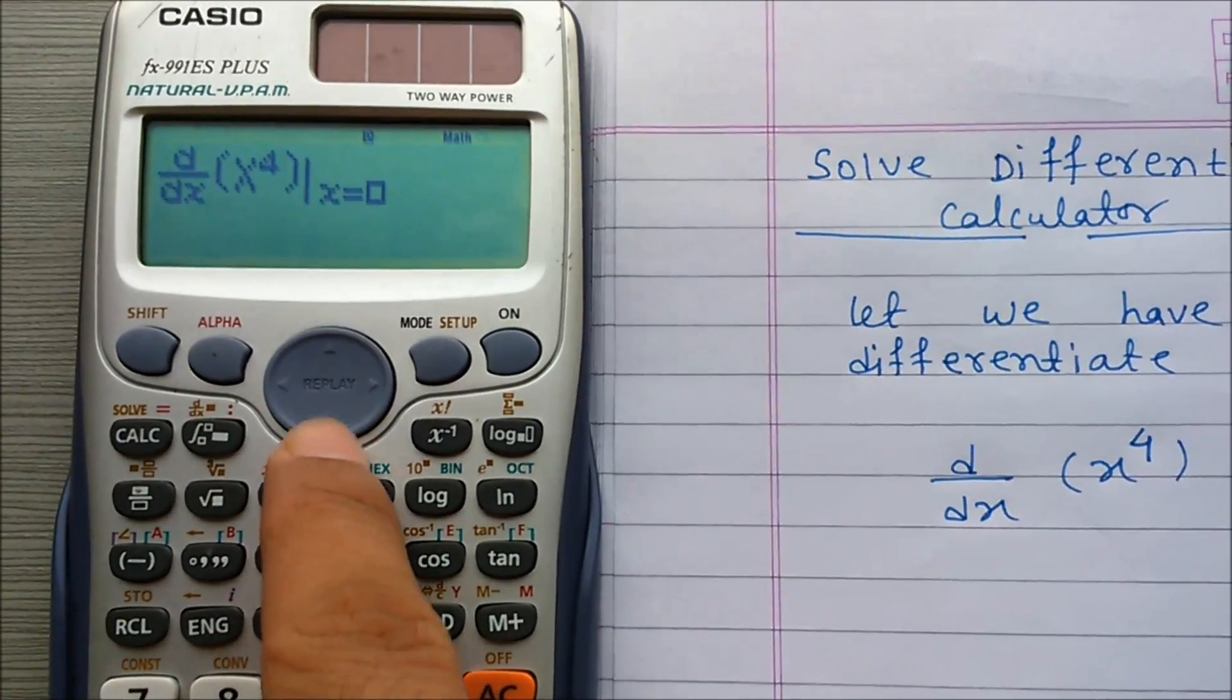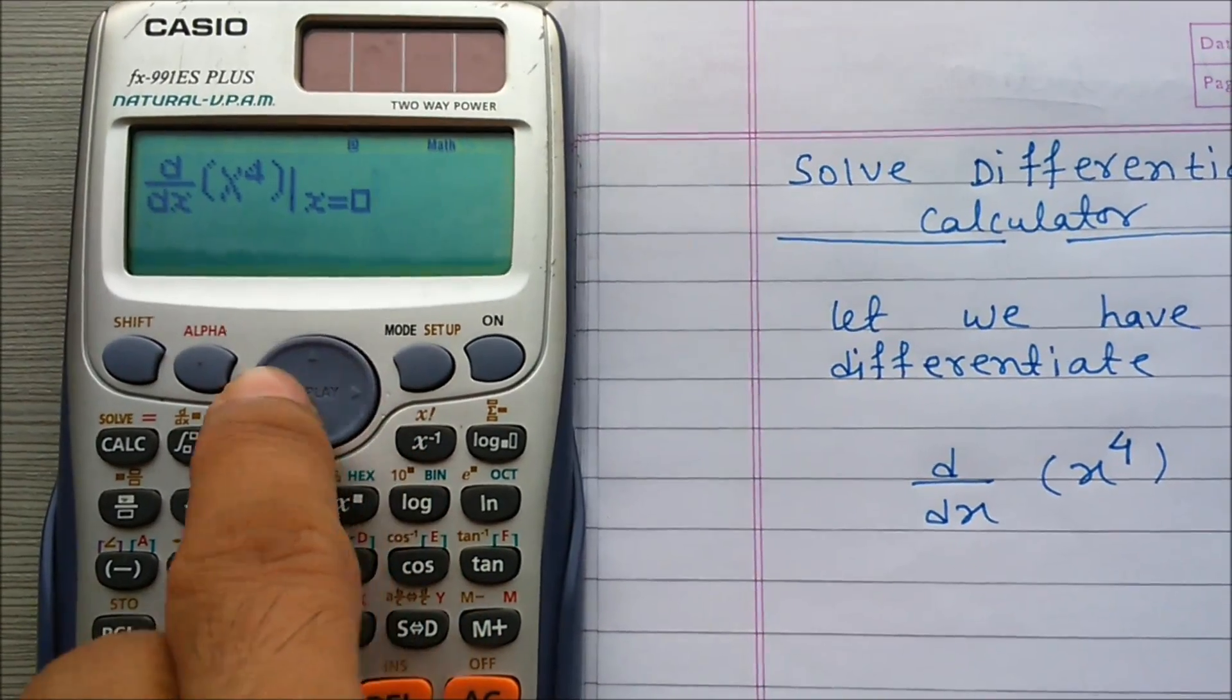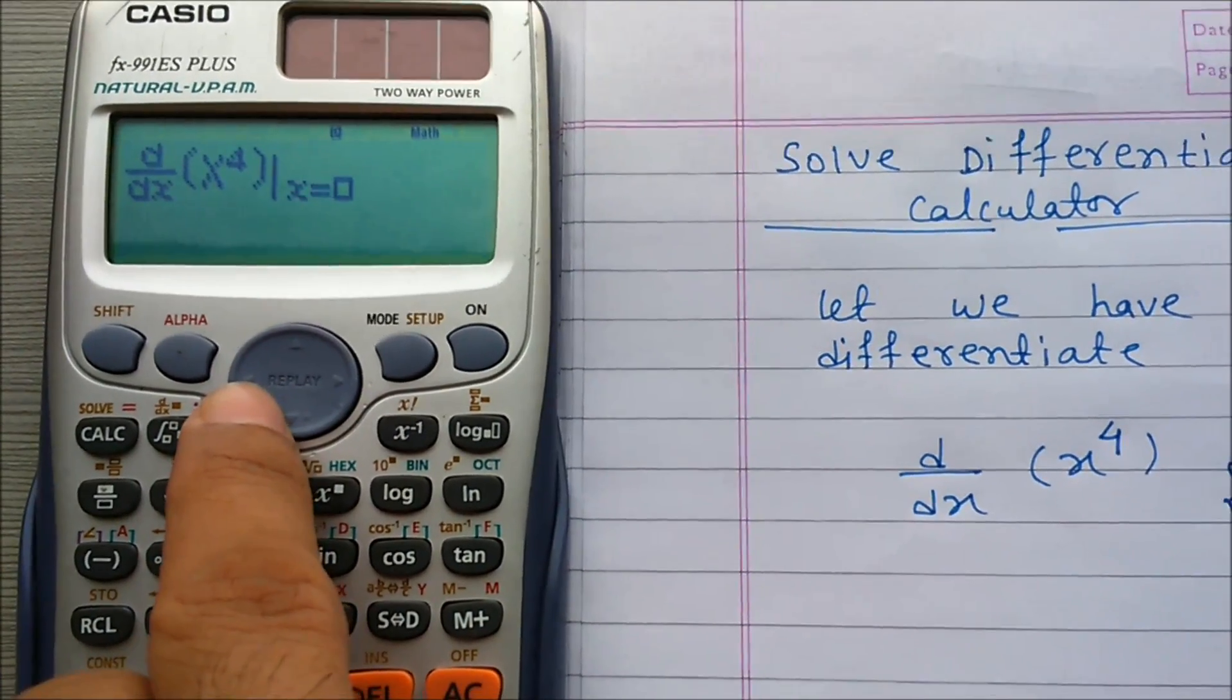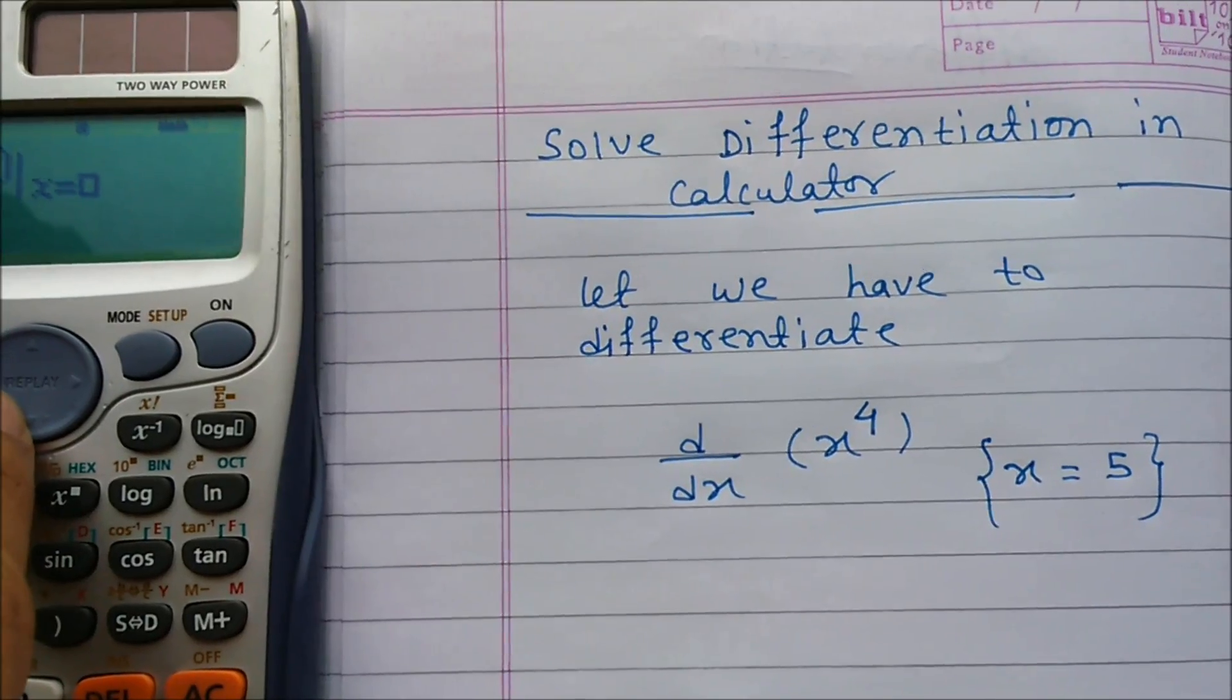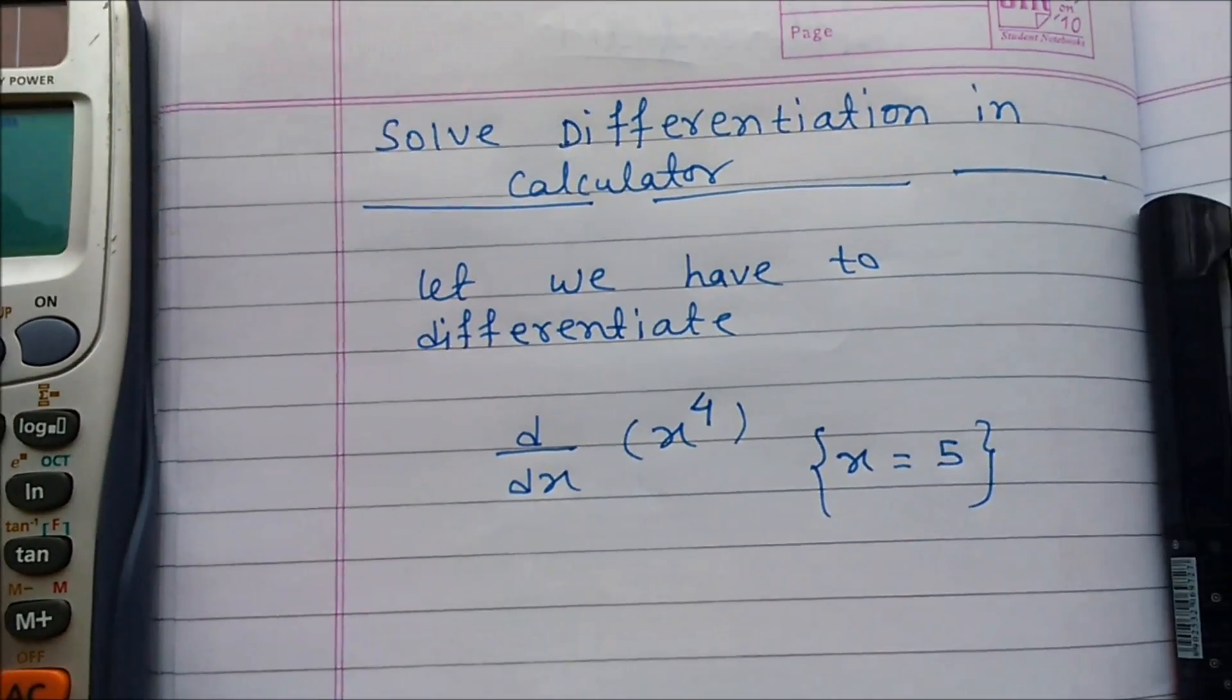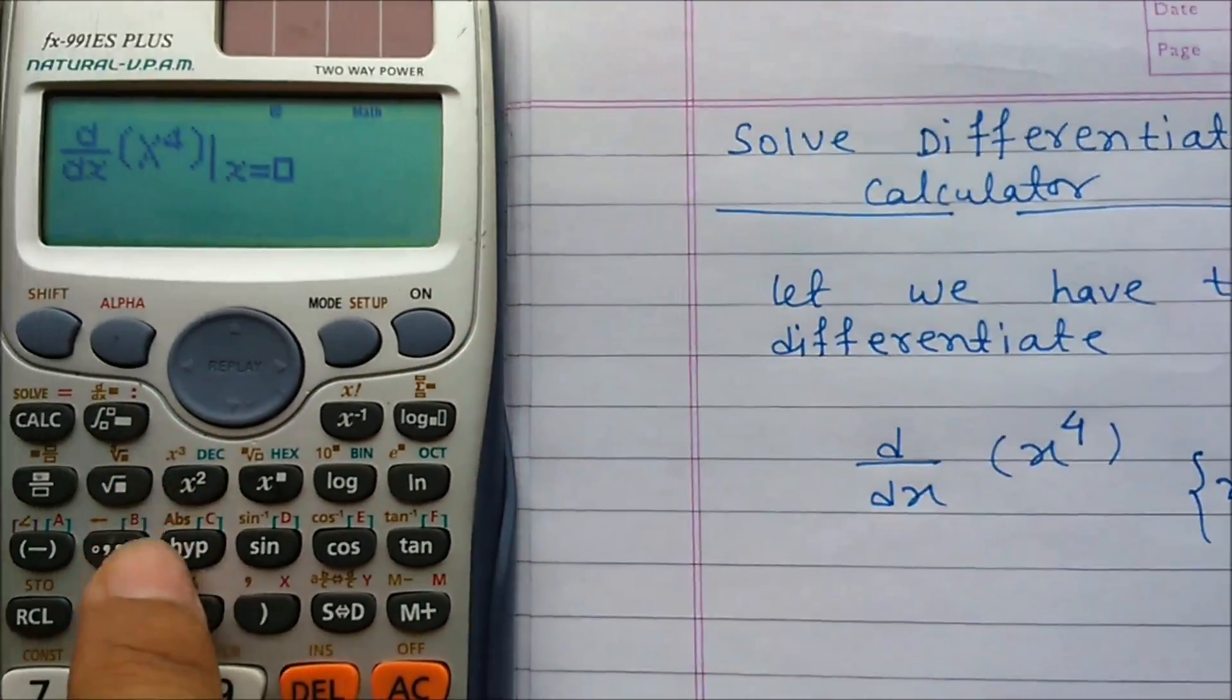And now put the limit x equal to 5. So type 5.